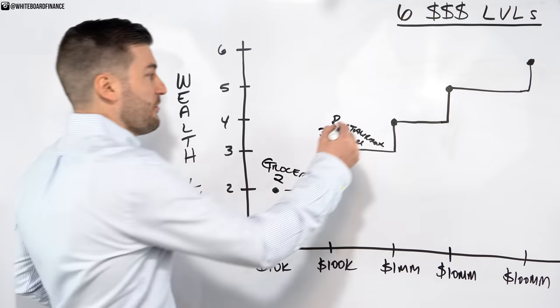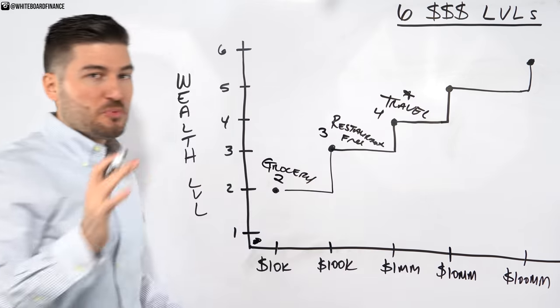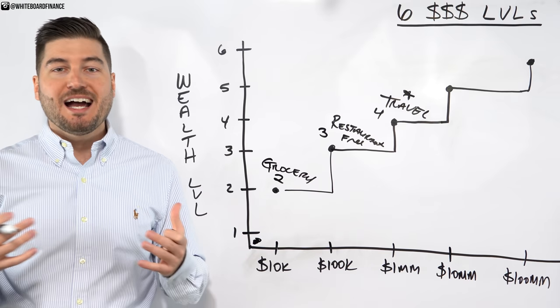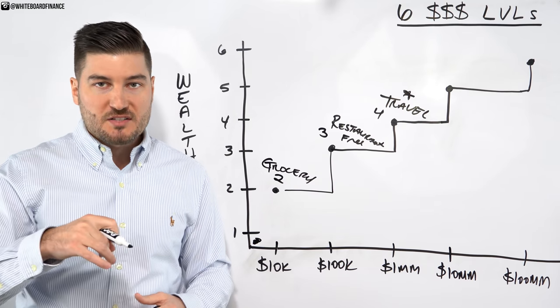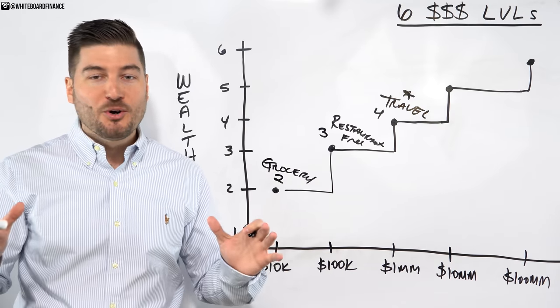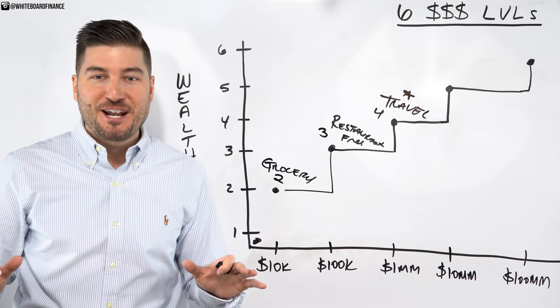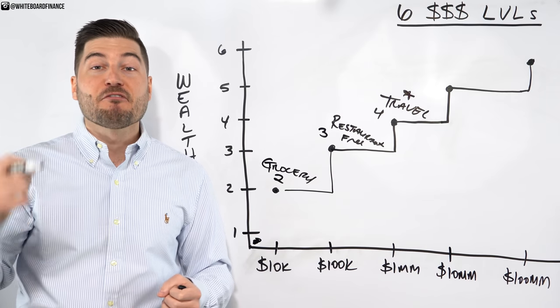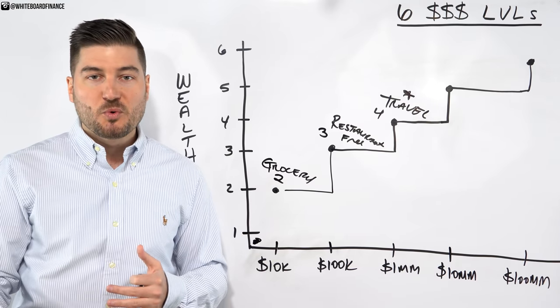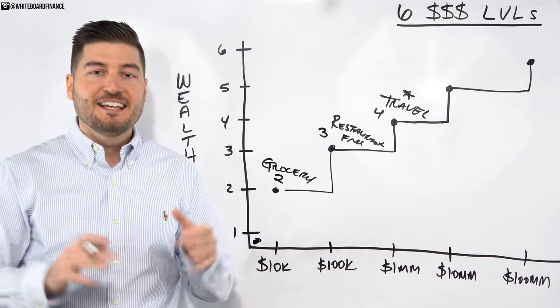So level four, which we have right here is travel freedom. This one's very important because it gives you perspective on how the world works. So this is being able to travel when you want, how you want, where you want. This is where most Americans fall short, in my opinion. They don't travel outside of the continent, let alone outside of the United States. And no, your all-inclusive vacation on a gated plantation in the middle of a third world country doesn't count as traveling, by the way. When I say travel, I'm talking about being fully immersed in a different culture where you can actually learn about how other people live around the world. True traveling, in my opinion, is having a 7% to 15% chance of getting robbed or kidnapped. Okay, now we're talking.